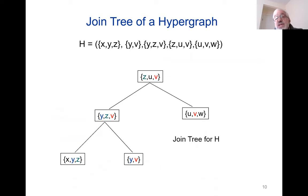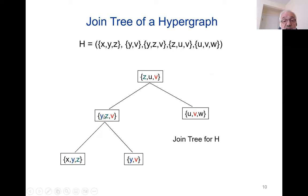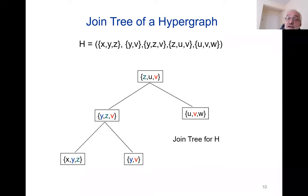What about the join tree? A hypergraph has a join tree if you can take its hyperedges and arrange them on a tree so that whenever you take a vertex from the hypergraph and look at the nodes on the tree on which this vertex appears, they form a subtree. For instance, if you look at node v, it appears here, here on the top, and there — that's a subtree. If you take node y, it appears here, and there, and there on the bottom triangle — again a subtree. So this is a proof that this hypergraph has a join tree.